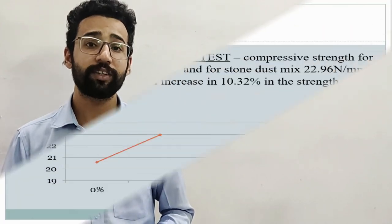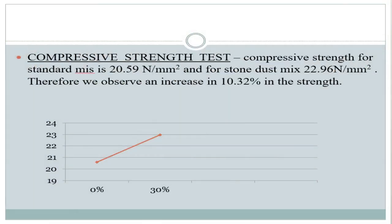From experimental testing at 30 percent replacement level, we concluded the following outcomes. First, the compressive strength of the standard mix is 10.32 percent less compared to the stone dust mix, which is a very good observation, as we can see in the graph.